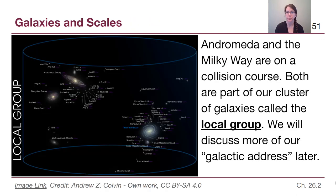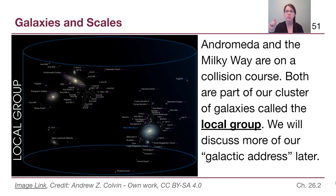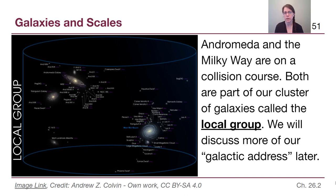That doesn't happen the way Edwin Hubble thought it did. Andromeda and the Milky Way are on a collision course — in about three billion years they will start the process of creating a giant elliptical galaxy. Both are the main masses in what our local cluster of galaxies is called the local group. There are a lot of small dwarf galaxies in our general neighborhood, but it's really just the Milky Way and Andromeda that are the large-scale ones.